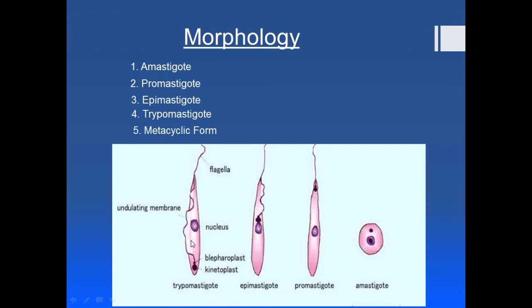The next form is the metacyclic form. The metacyclic form — for example, metacyclic trypomastigote — is actually the same as the above morphological forms but is smaller in size. When a form is a little bit smaller than its standard morphological form, we use the term 'metacyclic.' These are all the morphological forms seen in the life cycles of parasites of this class.